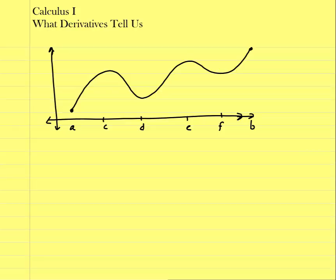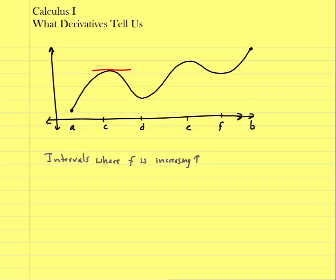What I want to do is look at intervals where the function is increasing. When we're talking about intervals, we want a list of x-values where the function is increasing. I sometimes abbreviate this with an arrow up for increasing. The function is increasing where I have positive-sloping tangent lines, and at the turning points, the derivative is equal to zero.